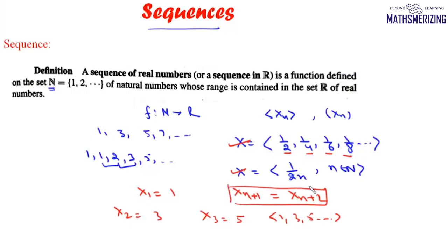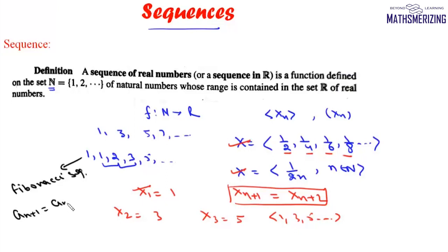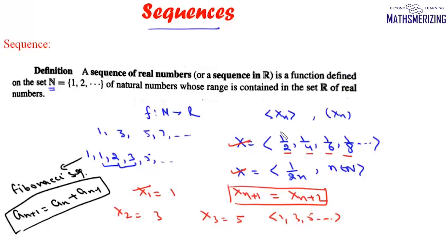The recursive relation is xₙ₊₁ = xₙ + 2 where x₁ = 1. The Fibonacci sequence can be expressed as aₙ₊₁ = aₙ + aₙ₋₁. So we may express any sequence by writing its ordered terms, by writing its nth term, or by a recursive formula.